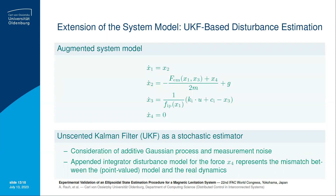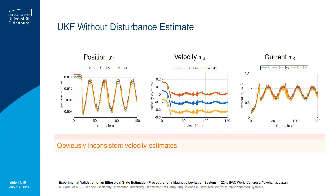If we want to perform a comparison of the ellipsoidal estimation procedure with a classical unscented Kalman filter, we also need to take into account model mismatches. Model mismatches here arise especially due to errors in the force characteristic, and they are included in the stochastic estimator by means of an integrated disturbance model for the disturbance force x4, and additionally we take into account additive Gaussian process and measurement noise.